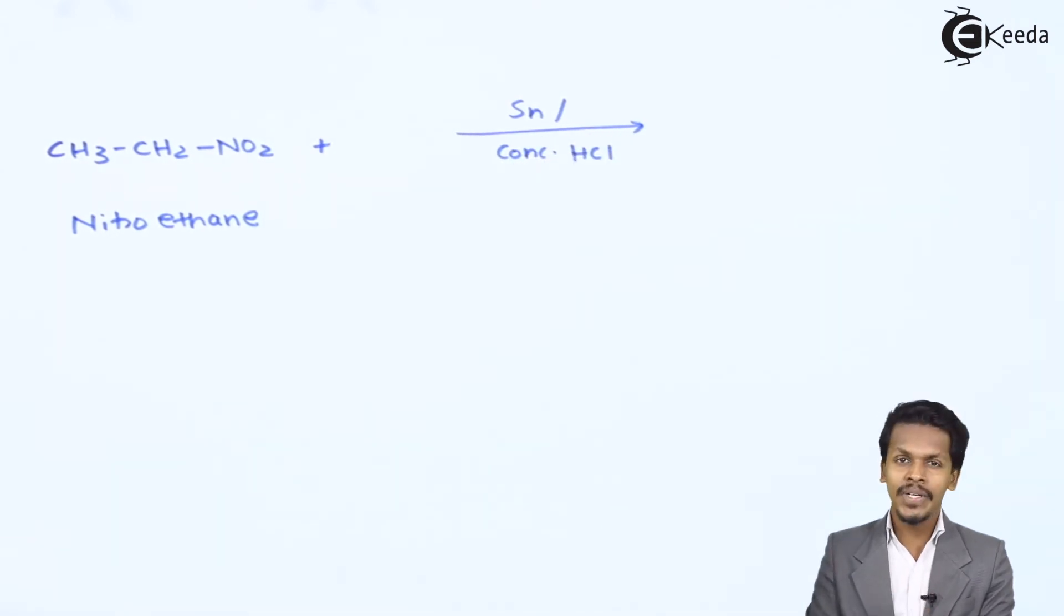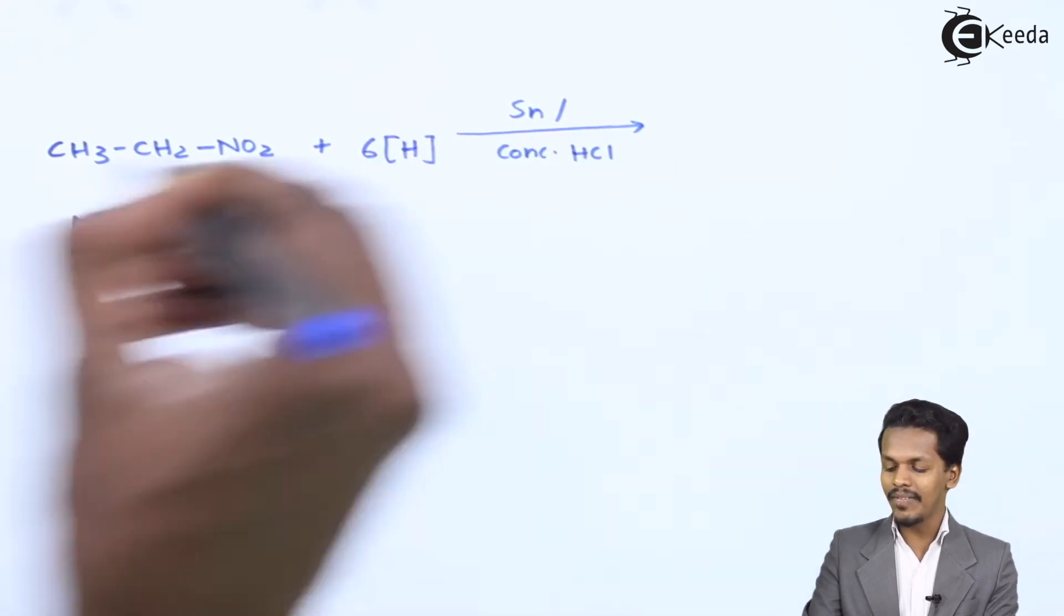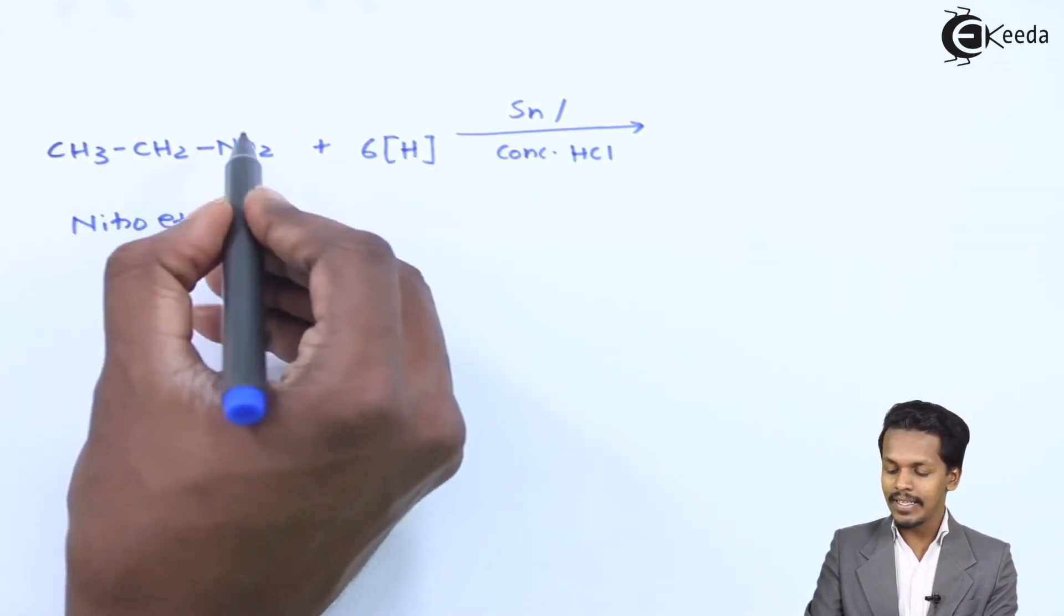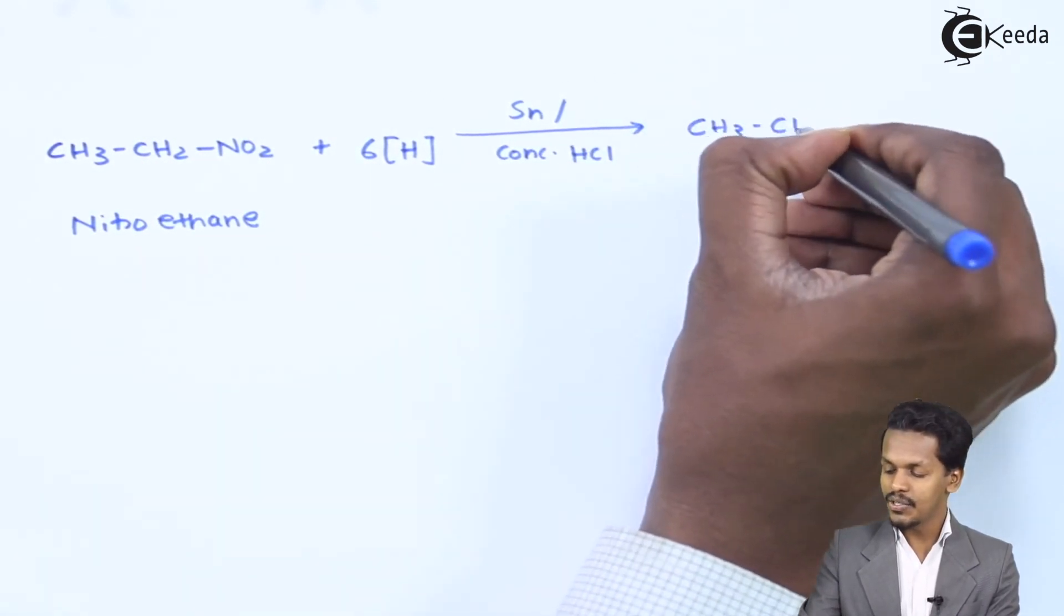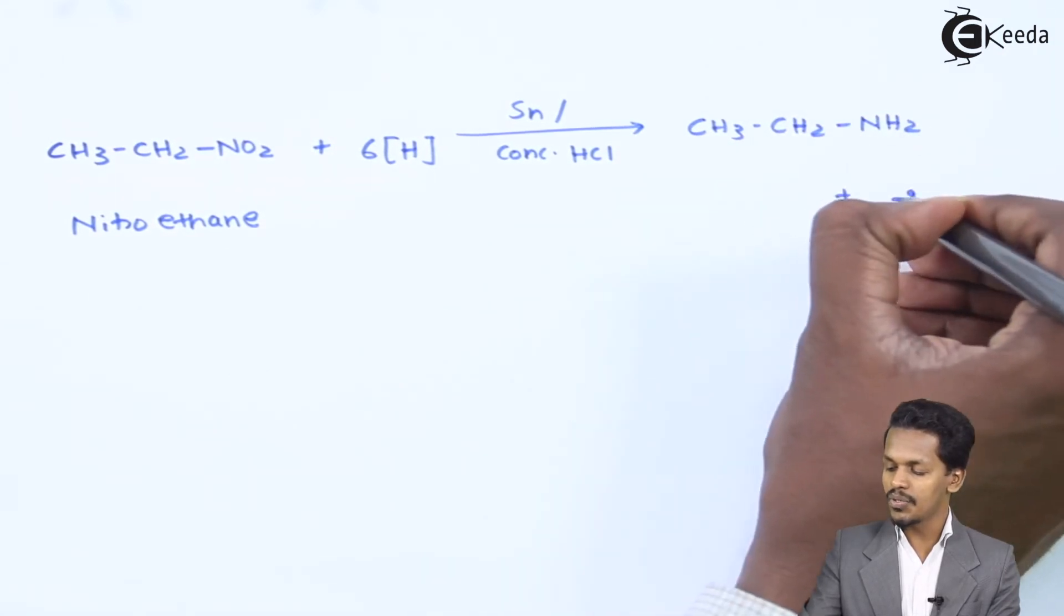As we understood in the general reaction, 6 moles of nascent hydrogen would be helpful to convert this NO2 group into NH2 group. So the product that we could get is CH3-CH2-NH2 along with removal of 2 moles of H2O.